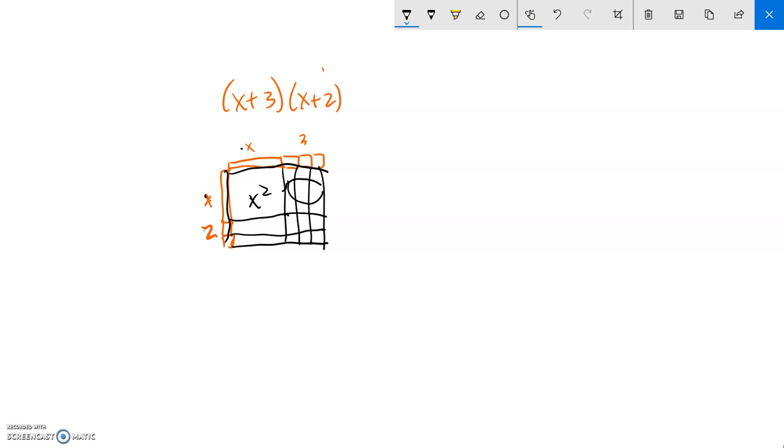Altogether in here it's 3 times x, so there's 3 x's in here. Altogether in here it's 2 times x, so there's 2 x's in here. And this bottom right corner is 6, you know, 3 times 2.